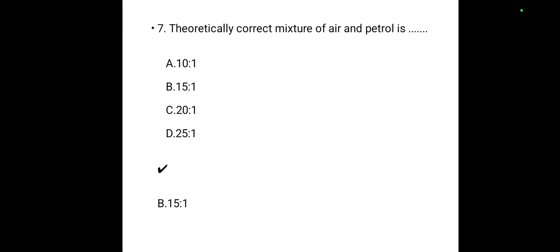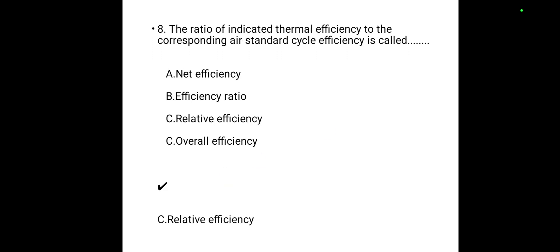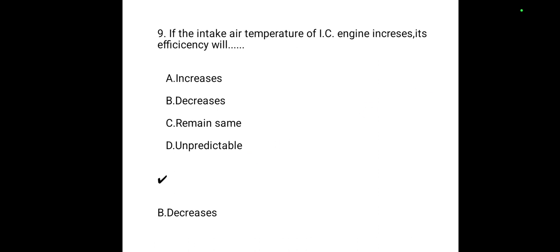The theoretically correct mixture of air and petrol is 15 to 1 — that is the correct answer. The ratio of indicated thermal efficiency to corresponding air standard cycle efficiency is called relative efficiency — Option C is the correct answer.